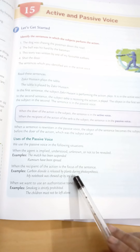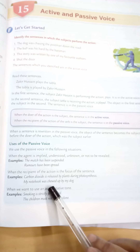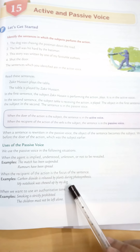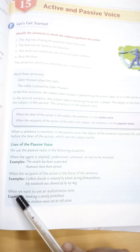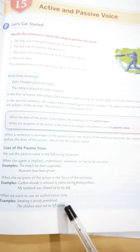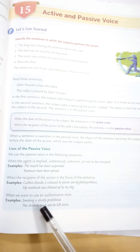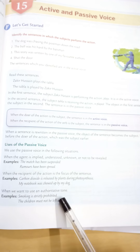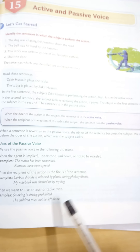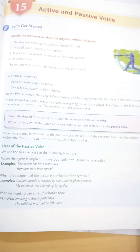Another situation is when the recipient of the action is the focus of the sentence. For example: 'Carbon dioxide is released by plants during photosynthesis.' 'My notebook was chewed by my dog.' When we want to use an authoritative tone: 'Smoking is strictly prohibited.' 'The children must not be left alone.' These use an authoritative tone.